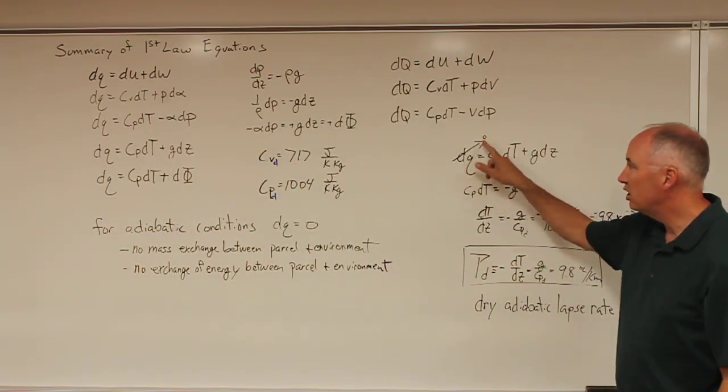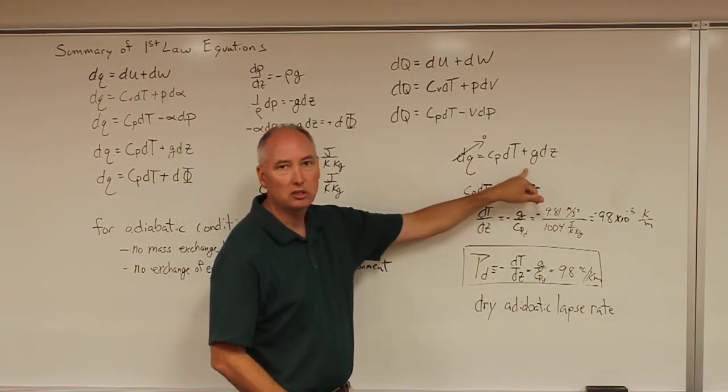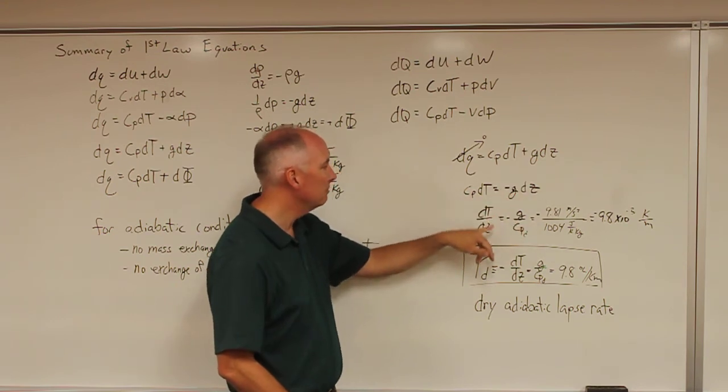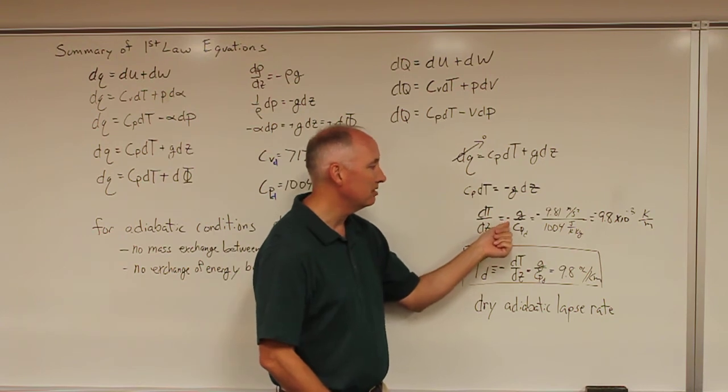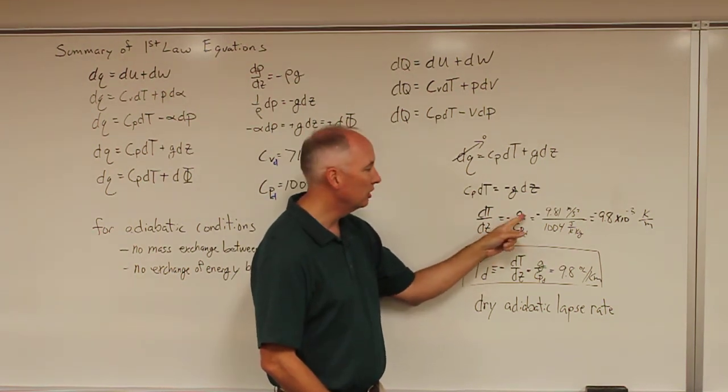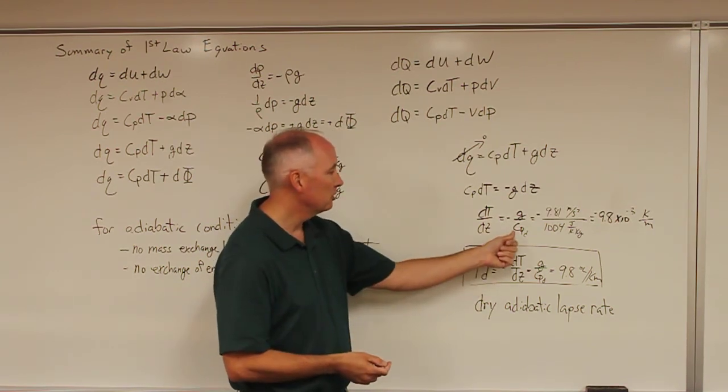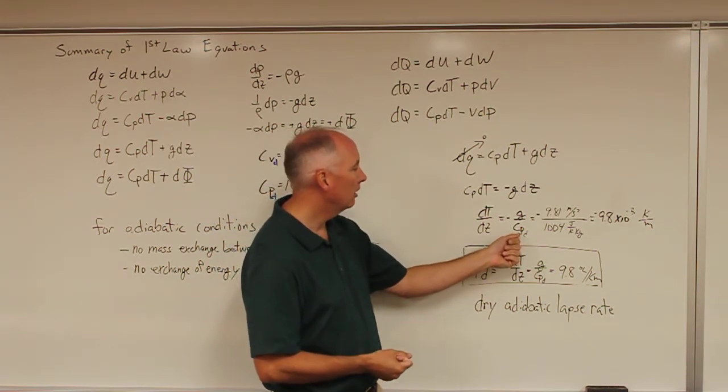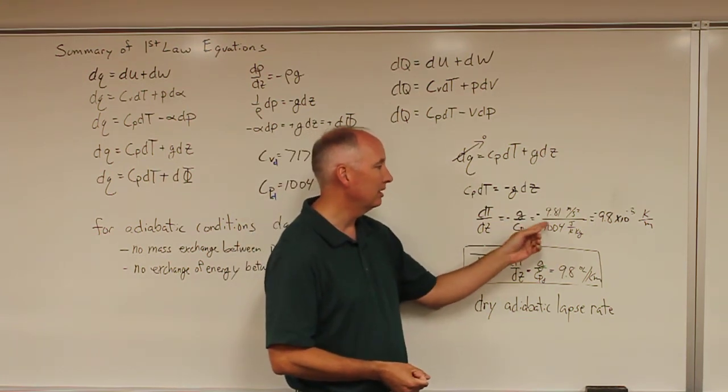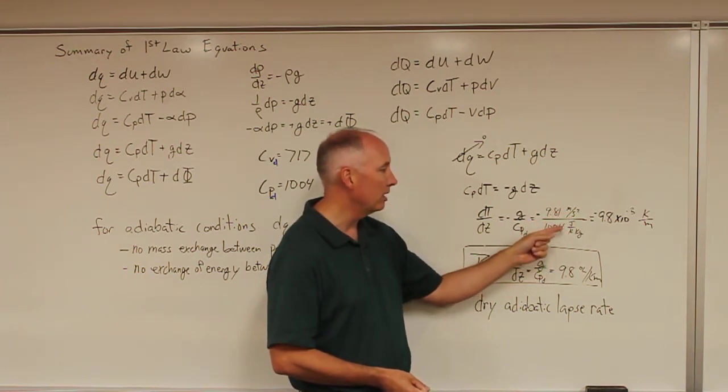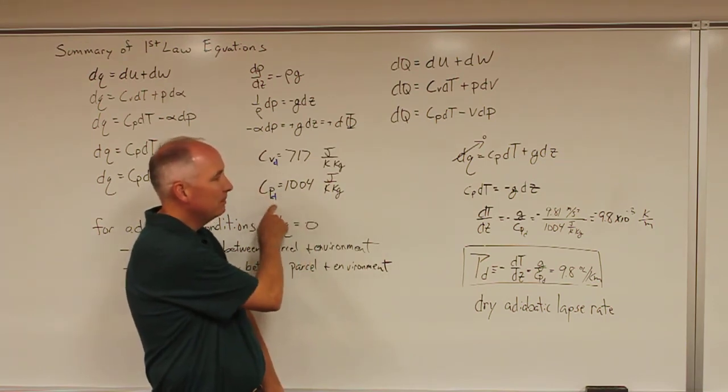We set dq equal to zero for an adiabatic condition. And then we start to algebraically solve for dt by dz. And you'll come up with dt by dz is equal to a constant minus the gravity divided by the specific heat of dry air at constant pressure. And that's equivalent numerically to minus 9.81 meters per second squared divided by 1004 joules per k per kilogram for c sub pd.